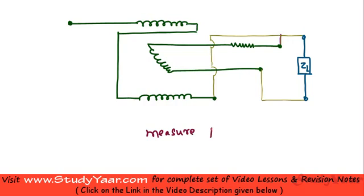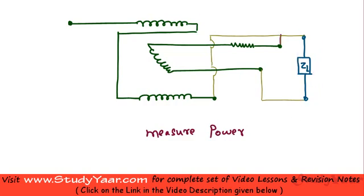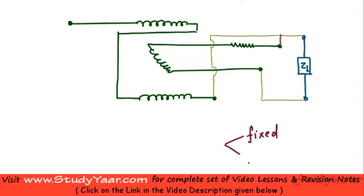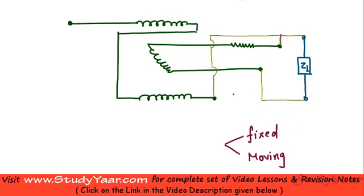In this particular diagram, we are trying to measure the power across this load. A wattmeter consists of two types of coils: one is your fixed coil and the other is your moving coil. The fixed coils come in two sets — one set here and another set here.